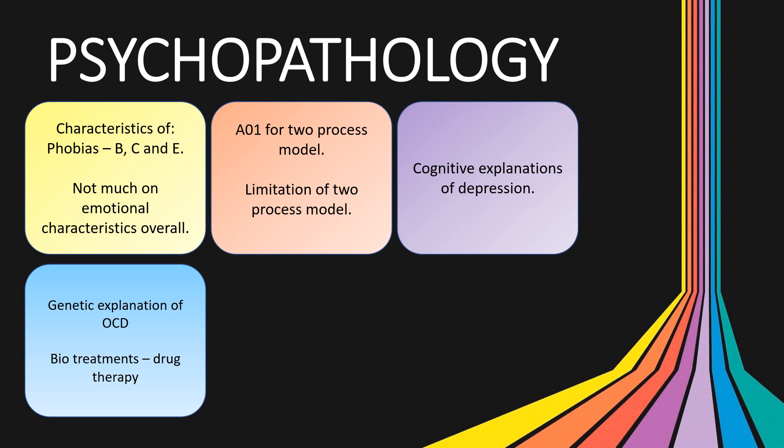There was a 16-mark question on the cognitive approach to the treatment of depression back in 2018, but there's been no mention of the cognitive approach to explaining depression — a real red flag. Be sure you know your cognitive triad and Ellis's ABC model. Two other red flag areas: the genetic explanation of OCD — there was an 8-marker last year on the neural explanation of OCD, so I really wouldn't be surprised to see the genetic explanation come up in 2020. And finally, the biological treatment of OCD hasn't factored in at all, and this is a real potential 16-mark question.